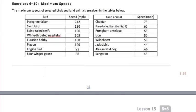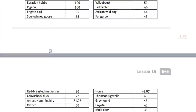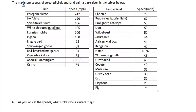Moving on, the maximum speeds of selected birds and land animals are given in the tables below. As you look at the speeds, first think about what strikes you as interesting. And I would say that the most interesting fact to me is that a peregrine falcon can fly at 242 miles per hour. And the next fastest bird is the swift bird at less than half that speed, 120 miles per hour, which still seems very fast. But to be more than twice as fast makes me wonder.